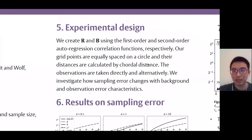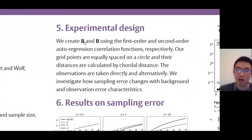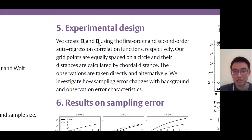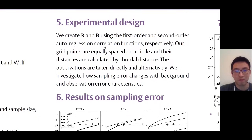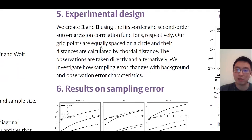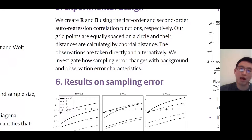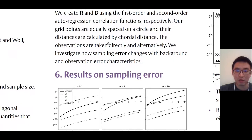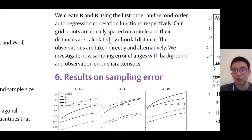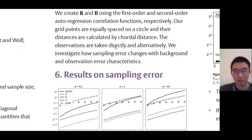Our experiment is designed as follows. We created the matrix R using the first order autoregression correlation function, and the background error covariance matrix B using the second order autoregression correlation function. This correlation matrix has been used in practical applications to model error covariance. We suppose our grid points are equally spaced on a circle and their distances are calculated by chordal distance. We assume our observations are taken alternatively at each grid point and are taken directly, meaning we have a linear observation operator containing only values of 0 and 1.